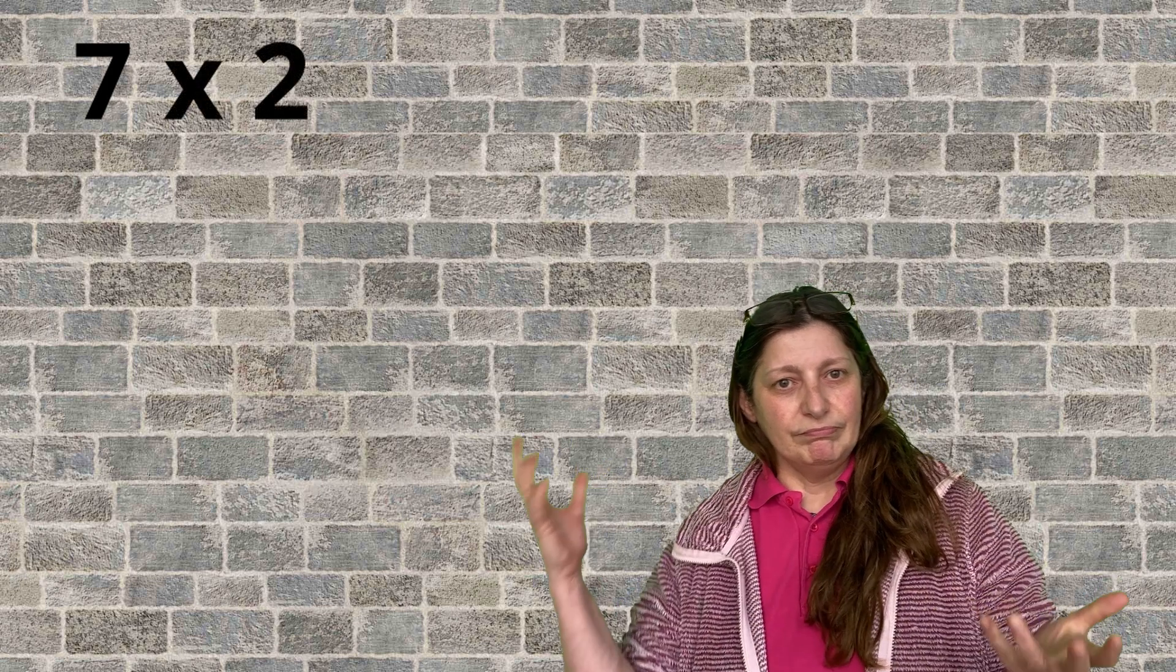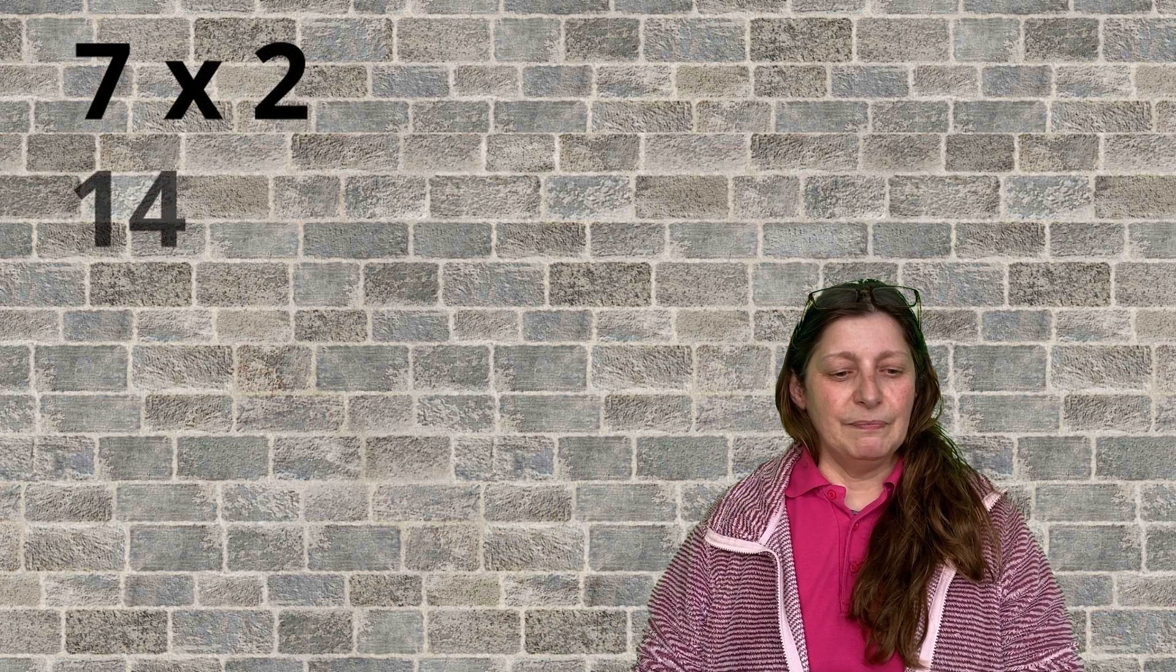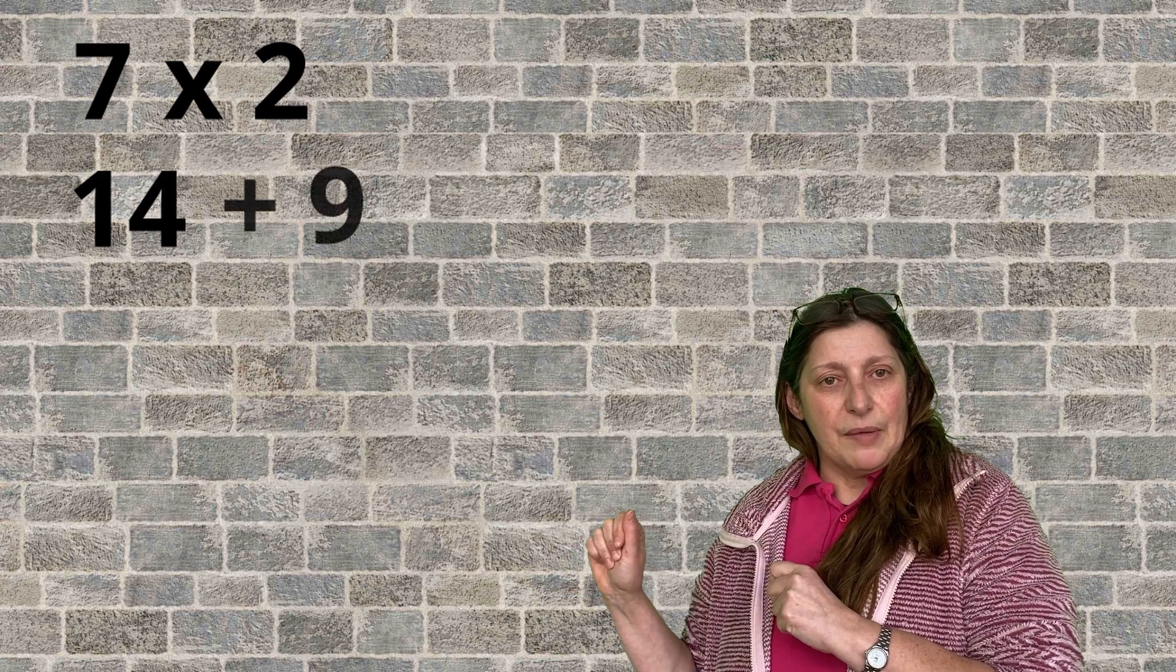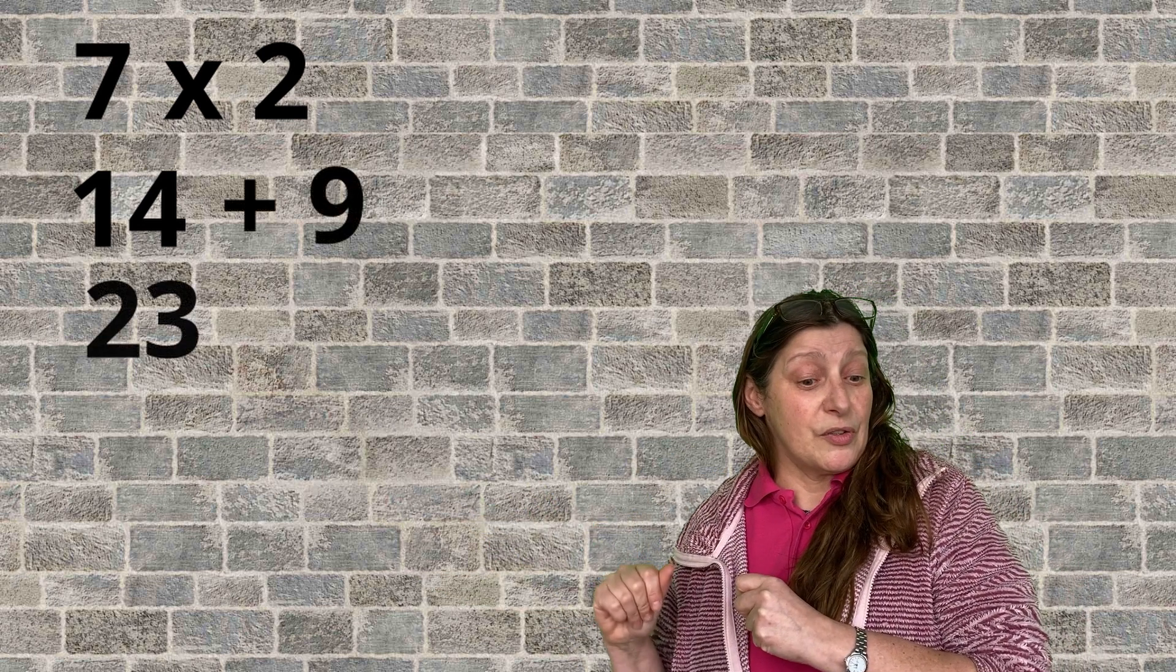Now, you're going to multiply it by 2. 14. Next step, you're adding 9 to that number. So, 14 and 9, that's 23.